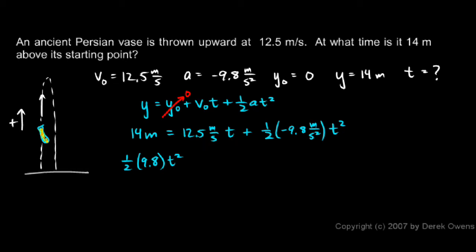And it will become negative. So I have minus 12.5 t. I'll keep the 14 meters on the left. So it's plus 14. And then I'm left with just zero on the right.